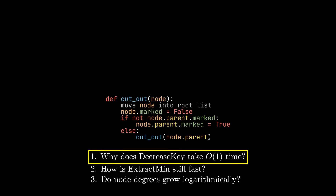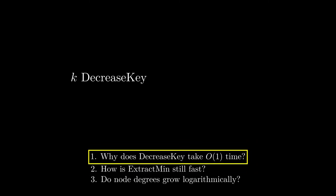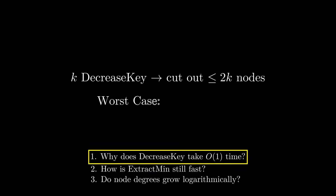We'll start by dealing with the first question: for 10 DecreaseKey calls, what is the maximum number of nodes we need to cut out in total? When we cut out a node, it's either because we decreased its key or because it's marked. During each DecreaseKey call, we mark at most one node, and once we cut out a marked node, we remove its marking. In the worst case, we need to cut out every node whose key we decreased — that's 10 — plus up to 10 additional marked nodes. So we need to cut out at most 20 nodes in total. In general, for k DecreaseKey calls, we need to cut out at most 2k nodes. This is basically another amortized analysis: while a single DecreaseKey might be slow, on average every DecreaseKey cuts out at most 2 nodes and therefore only takes constant time.